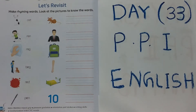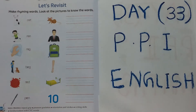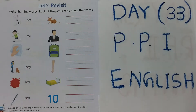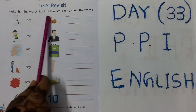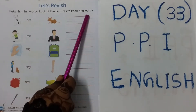Assalamu alaikum children. How are you all? Hope everyone is fine. Dear children, today we are going to learn a new concept — rhyming words. Look at the reader, children. Make rhyming words. Look at the pictures to know the words.